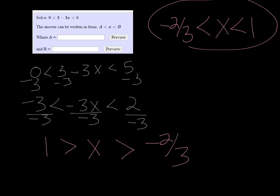So this would be the correct order to put it in. So a would be negative 2 thirds. And b would be 1.